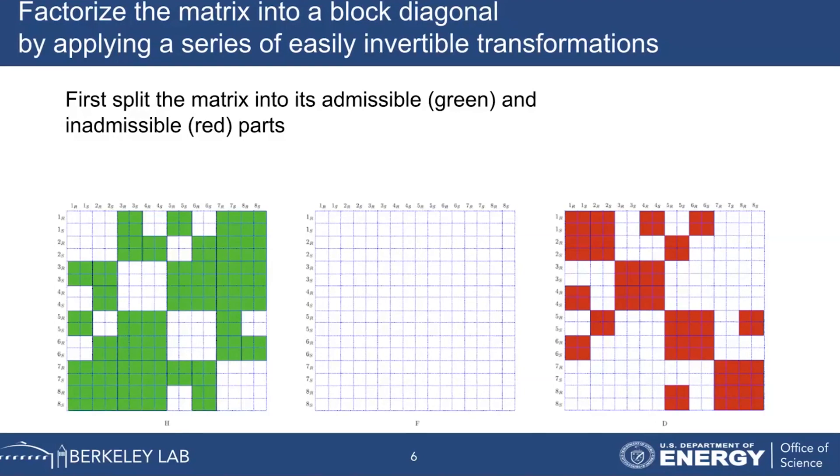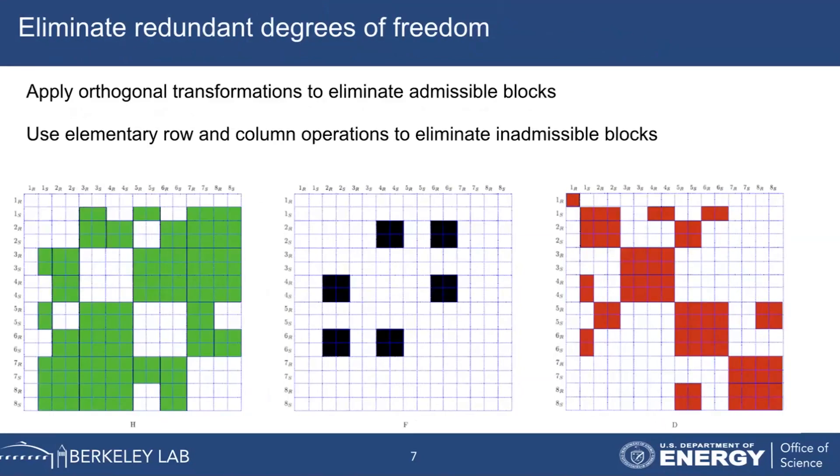The first step is we apply orthogonal transformations to eliminate the admissible blocks. For example, this first cluster, we eliminate the redundant portion of the matrix by applying orthogonal transformations. These orthogonal transformations are basically taking the original basis vectors that we had, the u's and the v's that were orthogonal, and we complete it using their complement, using a complementary basis. So when we scale these rows and columns, we zero out the redundant portions.